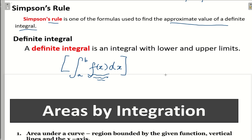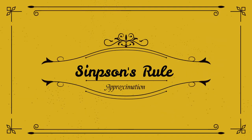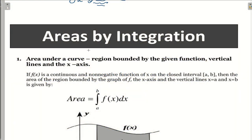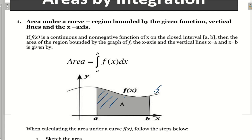Before that, I will do one example of the integration of a definite integral where the exact value will come out. Then we use Simpson's rule to approximate the value. If you want to find areas by integration, the area under a curve is the region bounded by the given function, vertical lines, and the x-axis. The area A here is the area bounded by the function f(x) and the x-axis with the lower limit A to upper limit B.